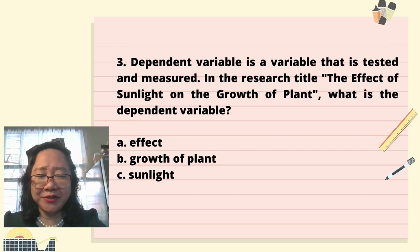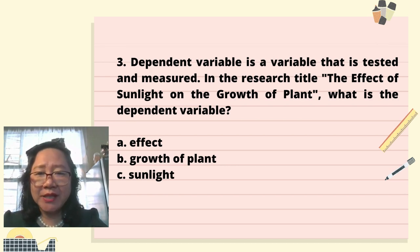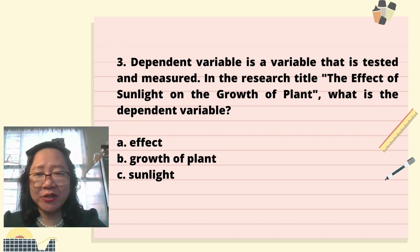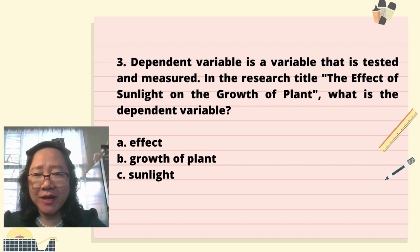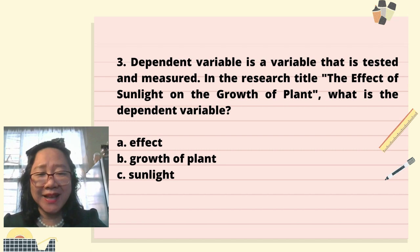Question 3: The dependent variable is a variable that is tested and measured. In the research title 'The effect of sunlight on the growth of plant,' what is the dependent variable? A. Effect. B. Growth of plant. C. Sunlight.